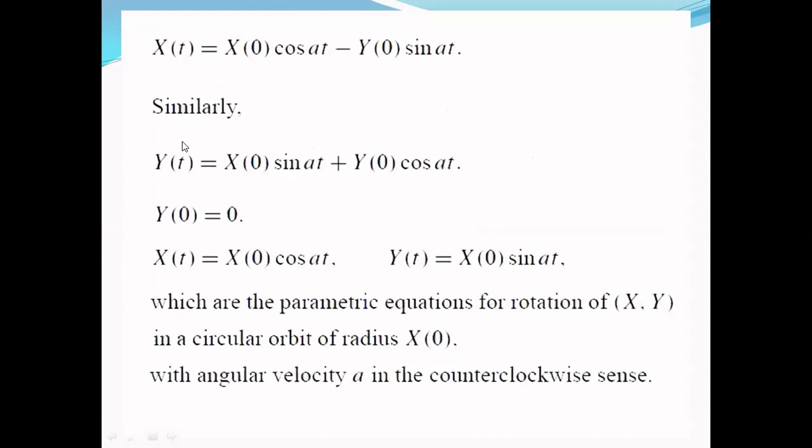And finally, Y(t) = X(0)sin(at) + Y(0)cos(at). So, we have two equations: X(t) = X(0)cos(at) - Y(0)sin(at) and Y(t) = X(0)sin(at) + Y(0)cos(at).